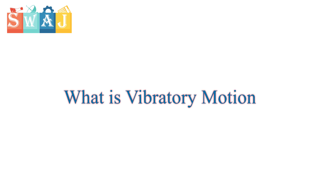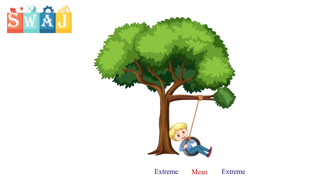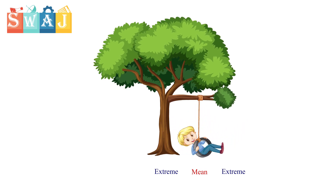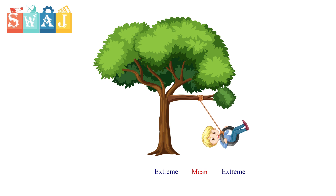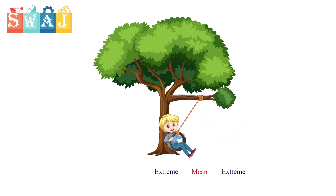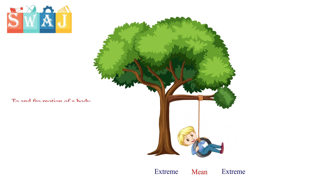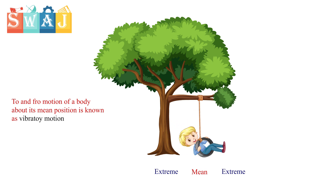Vibratory Motion. Consider a baby in a swing. As it is pushed, the swing moves back and forth about its main position. The motion of a body repeats from one extreme position to the other extreme with the swing. So, to and fro motion of a body about its main position is known as vibratory motion.